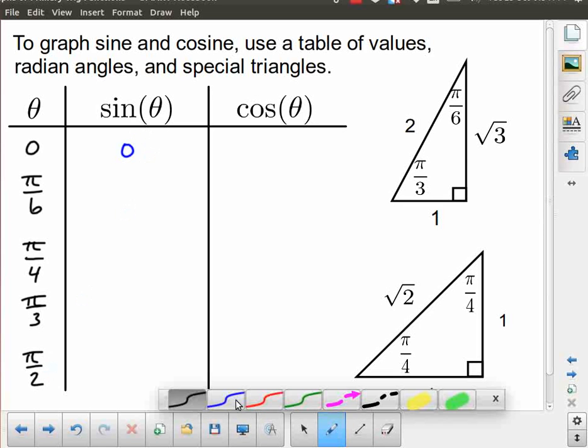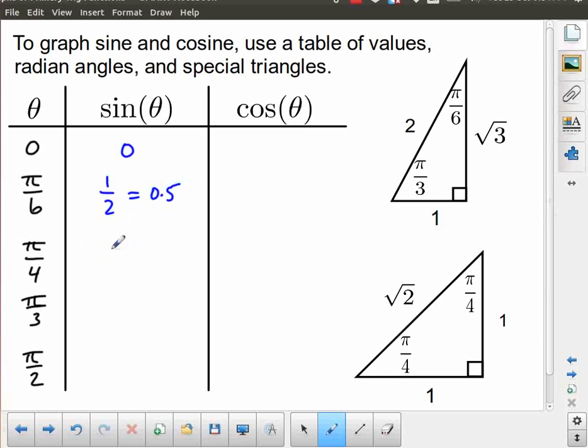For sine, the sine of pi by 6 comes from this special triangle. Sine is opposite over hypotenuse. That's equal to 1 half, which is equal to 0.5. I'm going to be converting these to decimals just for... if you're graphing, it might be easier to think of these in decimals. The sine of pi by 4, opposite over hypotenuse, that's 1 over root 2, which you may have also seen rationalized as root 2 over 2. And that's approximately equal to 0.7. I think one decimal place is actually enough there. It's actually approximately equal to 0.707, but 0.7 is fine.